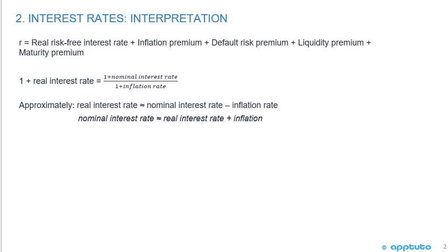When talking about the real risk-free rate, the formula is: (1 + real interest rate) = (1 + nominal interest rate) / (1 + inflation rate). You'll see this later in economics. As a quick approximation, the real interest rate equals the nominal interest rate minus the inflation rate. Spinning the algebra, the nominal interest rate equals the real interest rate plus inflation.